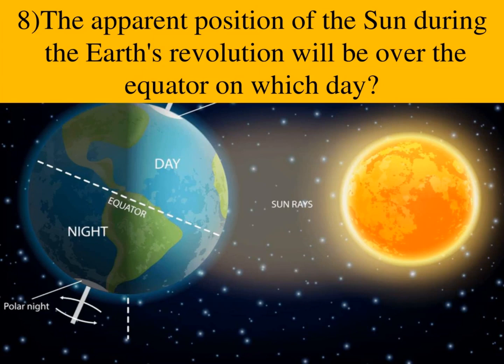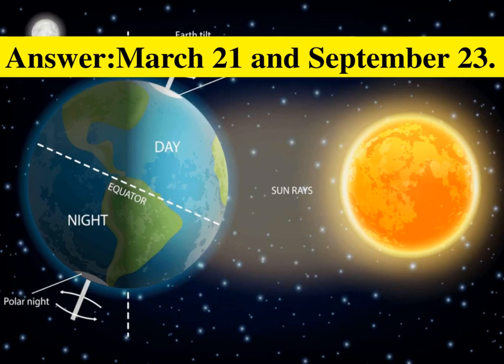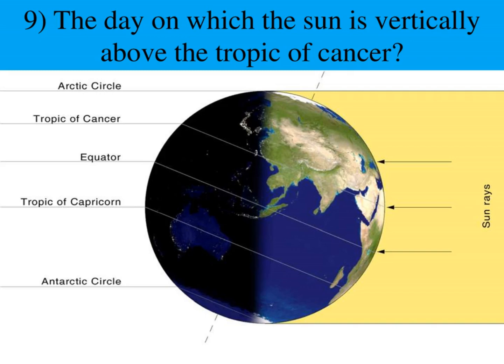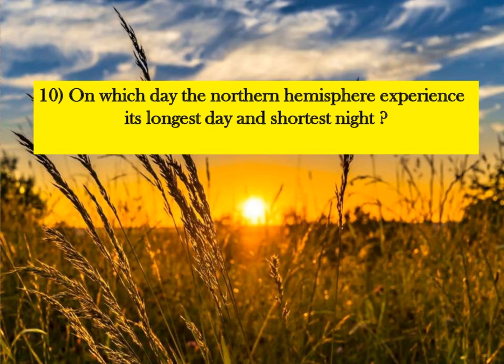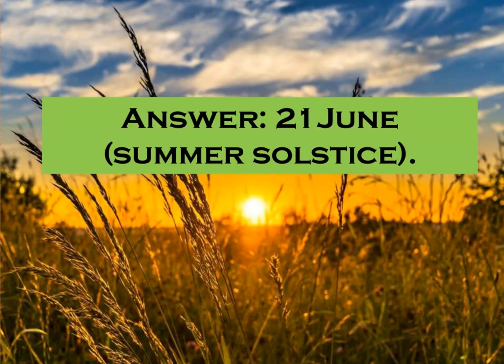The apparent position of the Sun during the Earth's revolution will be over the equator on which days? Answer: March 21st and September 23rd. The day on which the Sun is vertically above the Tropic of Cancer is known as Summer Solstice. On which day does the Northern Hemisphere experience its longest day and shortest night? Answer: 21st June — Summer Solstice.